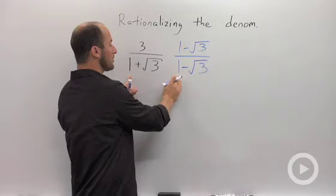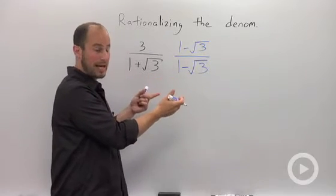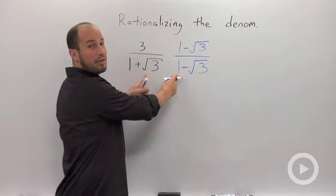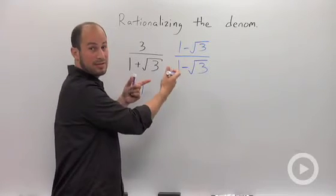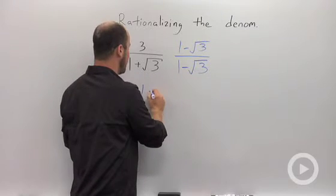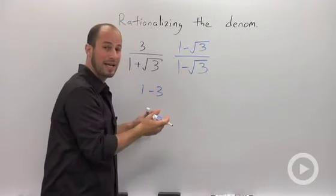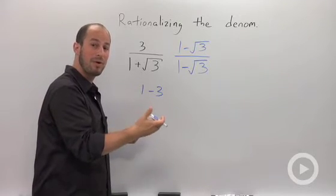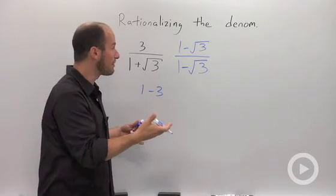And what happens is now when we multiply this through we have to foil it out and so we end up with 1. We have positive root 3 and negative root 3 which cancel so those disappear and then we have root 3 times root 3 which is 3, distributing the negative. So we end up with 1 minus 3 in the denominator or negative 2 which is what we wanted. We wanted to get rid of that square root from the denominator.